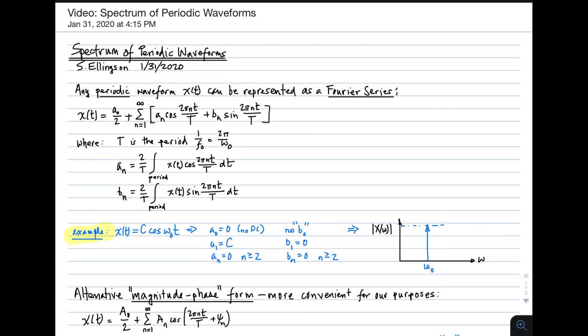So, for example, the very simple waveform c times cos(ω₀t), what we end up with is a₀ being 0, which simply means there's no DC component. a₁ is equal to c, which is saying simply that the component at the frequency ω₀ is magnitude c. And all values of a_n for n greater than 2 are 0, because there's nothing else required to make that waveform. In this formulation, there is no b₀, so that's irrelevant.